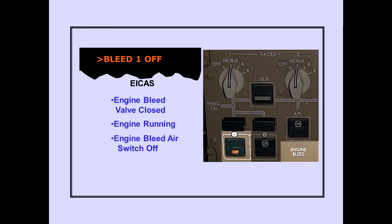The ICAS advisory message 'bleed off' is displayed when an engine bleed valve is closed, the respective engine is running, and the respective engine bleed air switch is off. The off-light also illuminates.